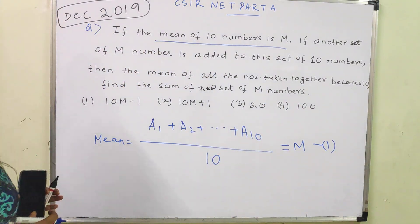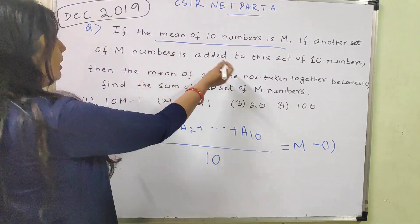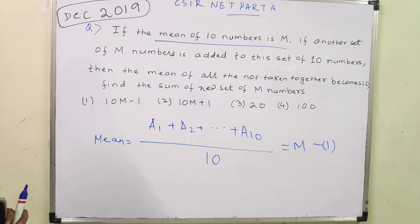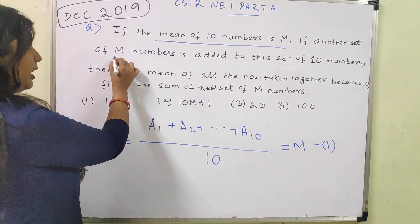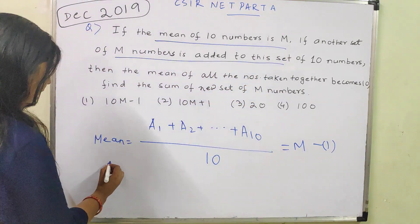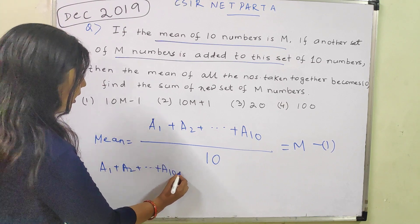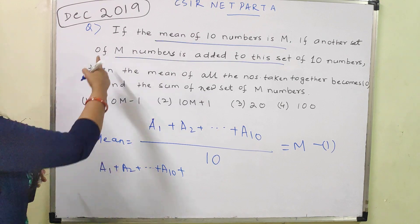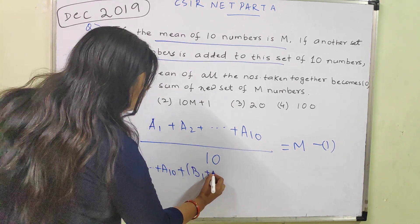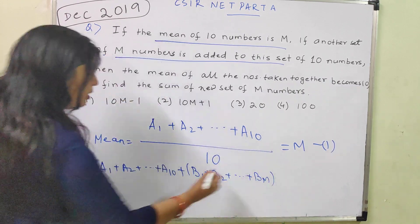After that, if another set of M numbers is added to this set of 10 numbers, then the mean of all the numbers taken together becomes 10. So another set of M numbers is added. We already had A1 plus A2 plus ... plus A10, and new numbers are added — M numbers. Suppose B1, B2, up to Bm, because M new numbers are added.